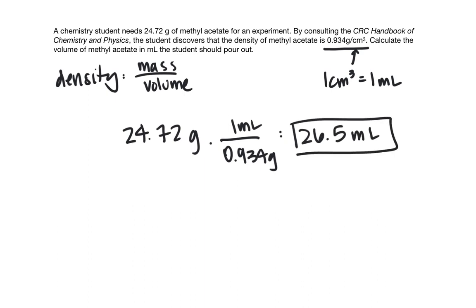You could have also just rearranged this equation where d equals m over v. You need to solve for the volume, where volume equals mass divided by density, which is what we did. We just used a unit conversion to get our units to cancel to make sure we got the right thing, and that's the key thing.